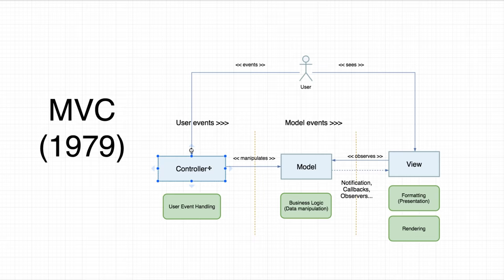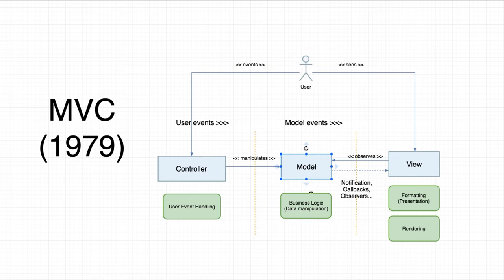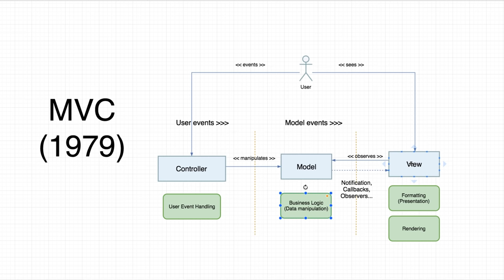The controller depends on the model layer, and the view also depends on the model — that's why the model is right at the center of this diagram. The model doesn't depend on the controller or the view; all arrows point inwards. The only outward arrow is a broadcasting mechanism, which is indirect communication. This means the model could be tested in isolation, live in a separate module, and be reused in different scenarios — for example, plugged into a terminal view or a printer.